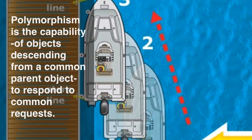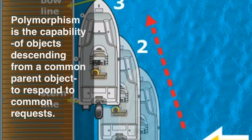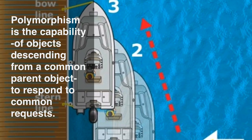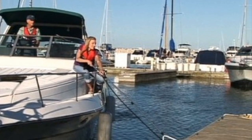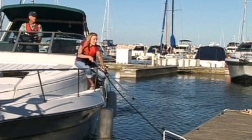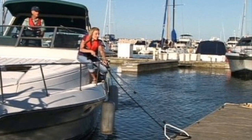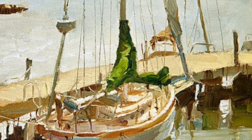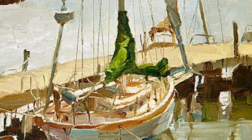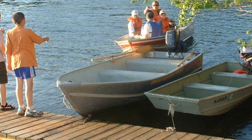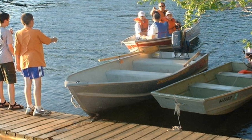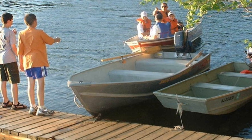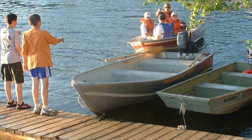So all boat objects can be given some common requests, provided they have a captain of course. For instance, all boat objects can be given the request to dock here, and different boat objects will accomplish that in different ways. But it doesn't particularly matter from the perspective of the person running the docking facility — which we might say is equivalent to your program — how the boat actually accomplishes internally how the captain does the docking. As long as we know that we can give each boat object the command to dock here and the boat will correctly and safely dock there. This capability is known as polymorphism.